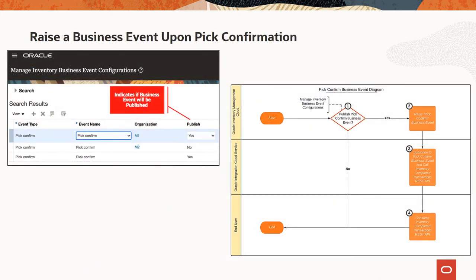In Oracle Integration Cloud, OIC, you can now subscribe to the new PIC Confirm Public Business Event to trigger additional business processes or integrate with third-party applications. For example, after the PIC Confirm Business Event is raised, you can use the completed transactions and inventory REST resource to obtain additional details related to the completed inventory transaction. You can then use that information to trigger an external print vendor to print shipping labels for you.